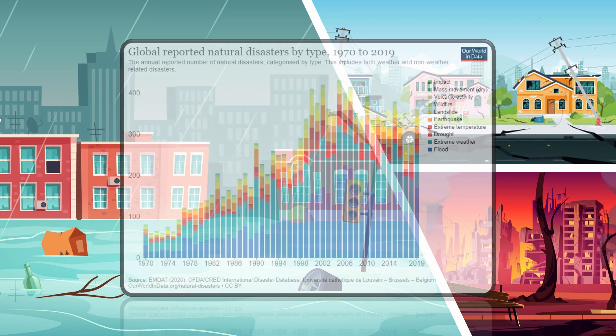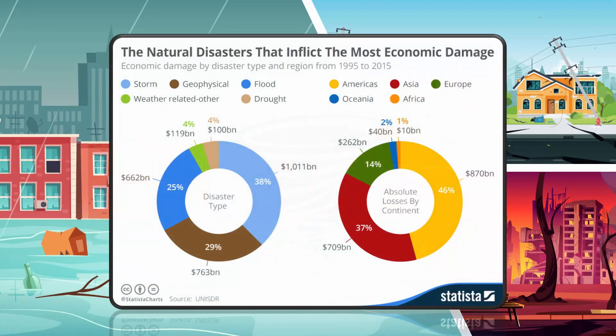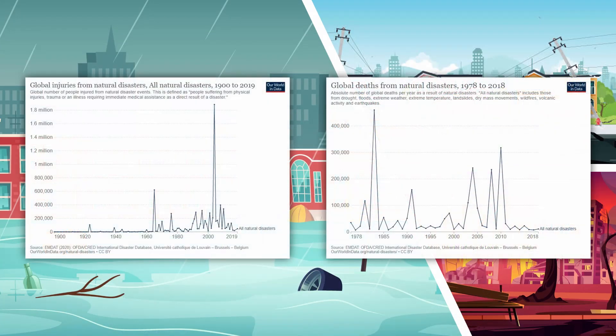From the data that can be seen here, it is clear that many disasters occur every year and have a huge impact on the economy and also cause the loss of life or injury. Therefore, the sooner we know of the occurrence of disasters, the more we can reduce the loss of both lives and economy.